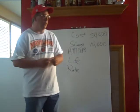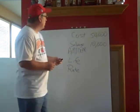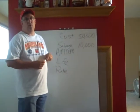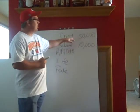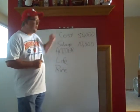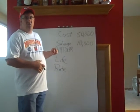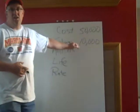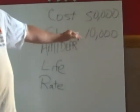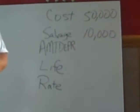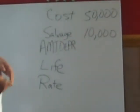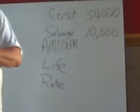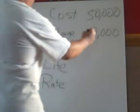So we're going to do a little example here. We have a piece of equipment that costs us $50,000. At the end of its useful life, we'll be able to sell it for $10,000 — that's called salvage value. The amount to be depreciated is going to be the difference between the two.